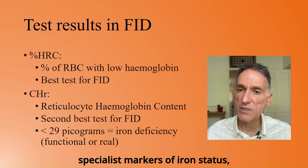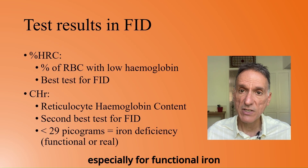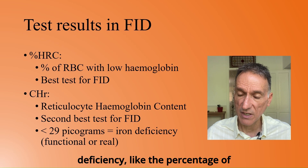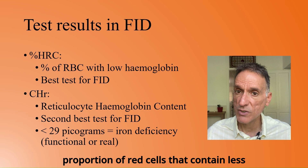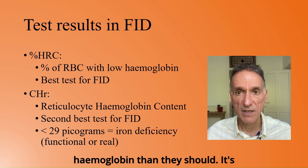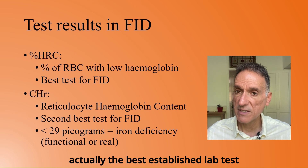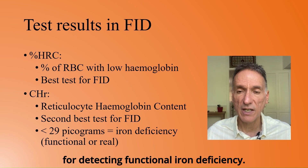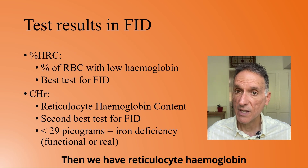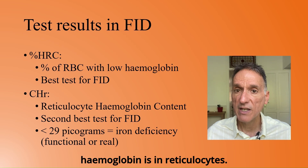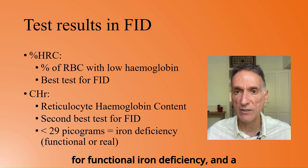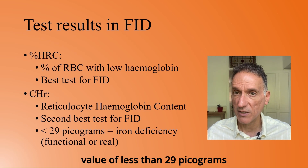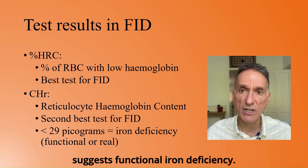Let's now move on to more specialist markers of iron status, especially for functional iron deficiency, like the percentage of hypochromic red cells, which measures the proportion of red cells that contain less hemoglobin than they should. It's actually the best established lab test for detecting functional iron deficiency. Then we have reticulocyte hemoglobin content, which measures how much hemoglobin is in reticulocytes. It's the second most established marker for functional iron deficiency, and a value of less than 29 pg suggests functional iron deficiency.